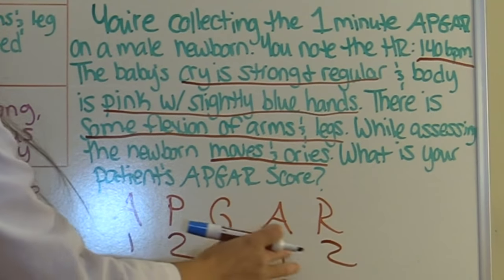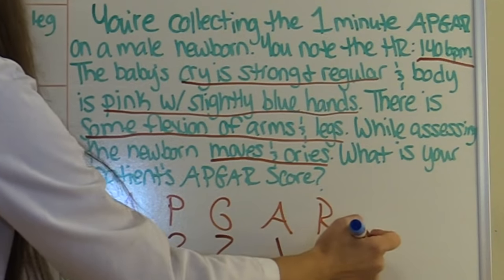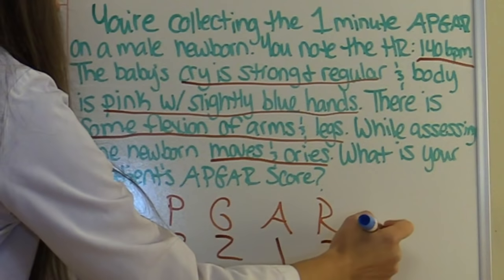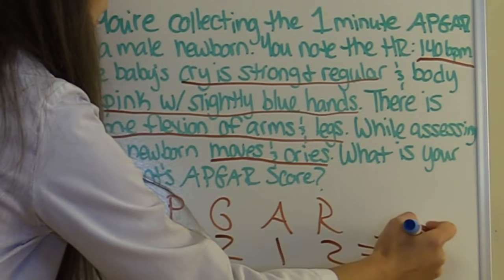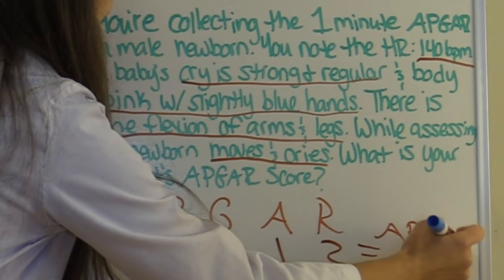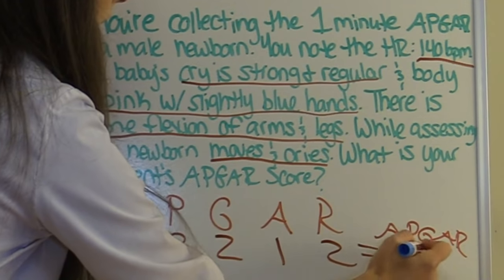Adding up the scores: two, four, six, seven, eight. The APGAR score is eight.